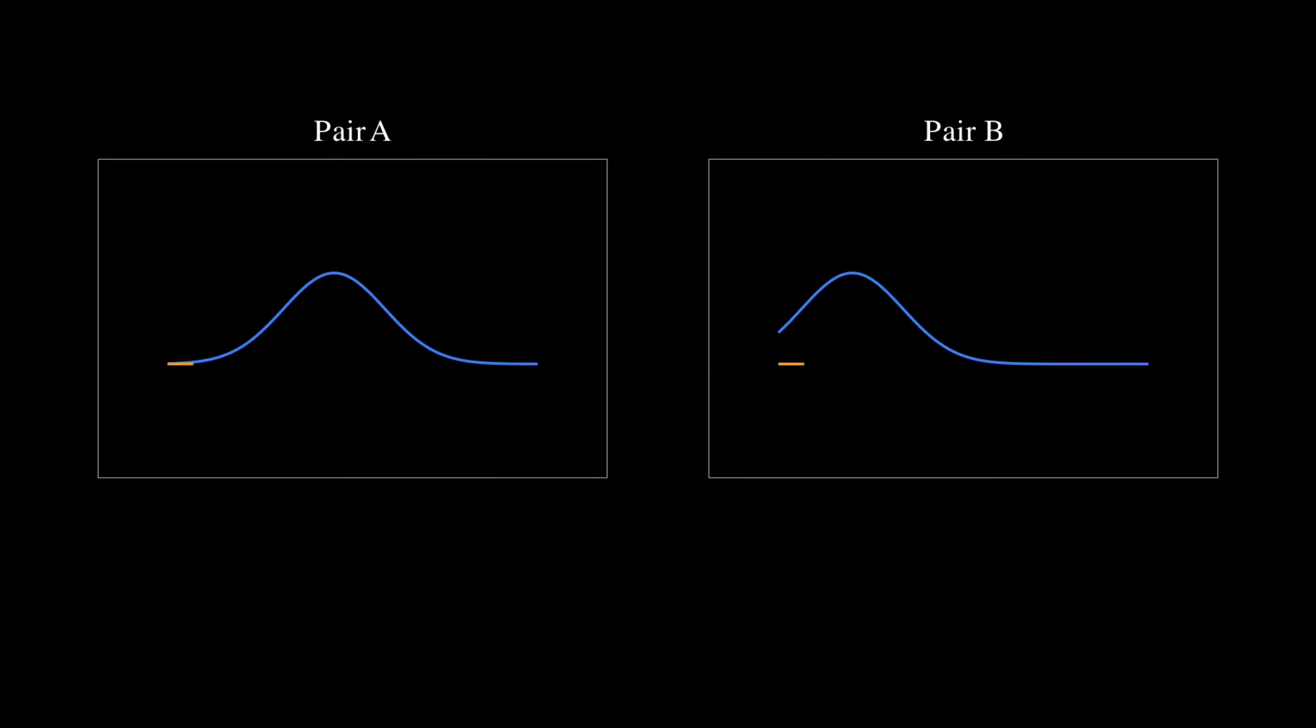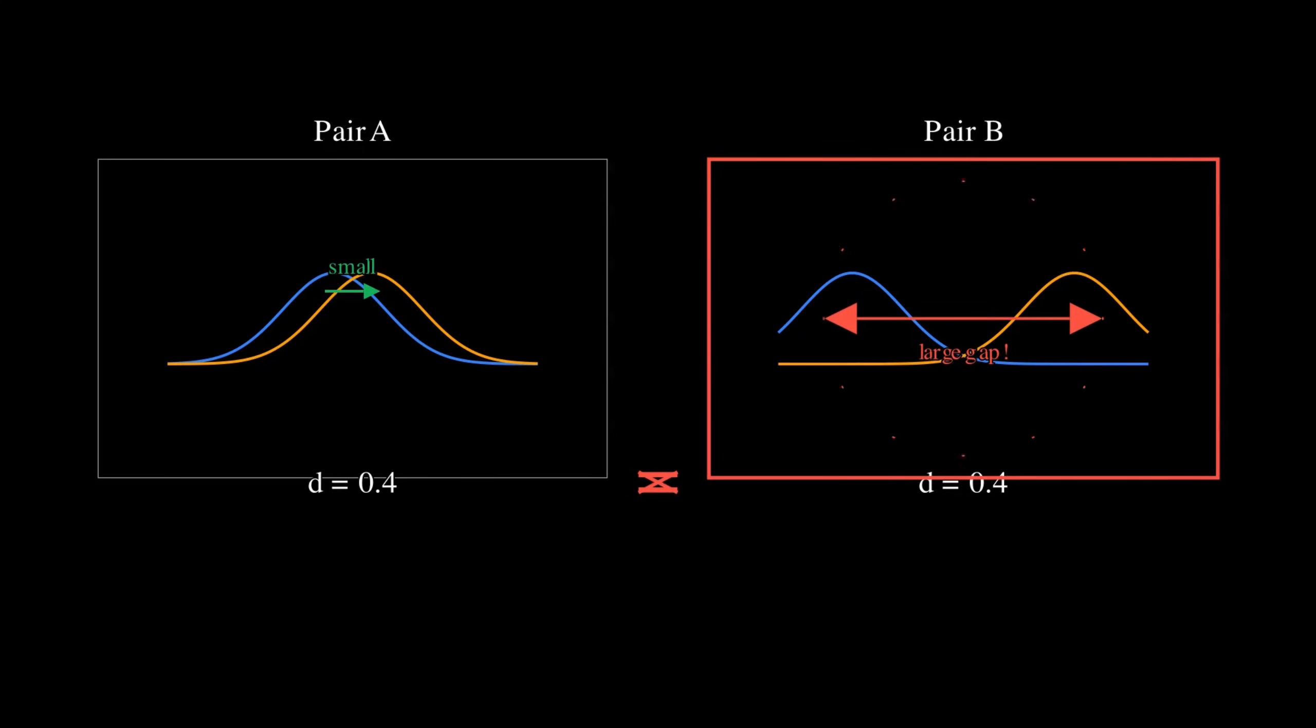Look at these two pairs of distributions. Traditional metrics say they're equally different. But wait, intuitively, the first pair is way more similar. They're just slightly shifted. The second pair, mass in completely different regions. See, simple subtraction is blind to geometry.